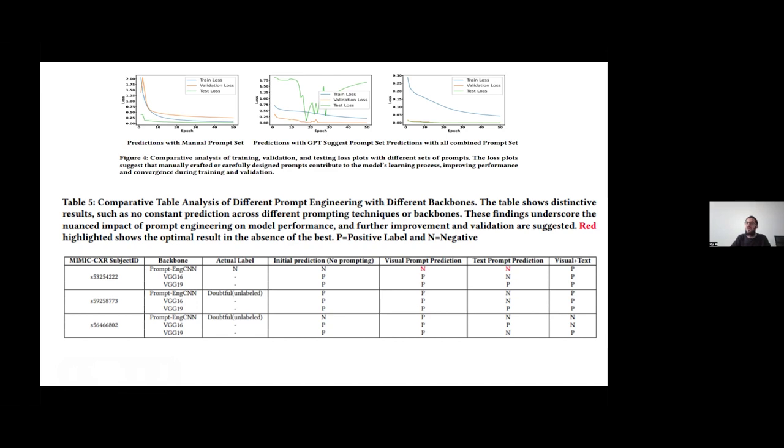And the first finding underscore the impact of prompt engineering on the model performance. On the visual prompt, we are getting some results. On the text prompts, we are getting some other results, but combining the visual and the text prompts, we are getting better results. And we have some backbones designed like the VGG 19, VGG 16, and then a simple network prompt engineering CNN, we utilize the CNN architecture.